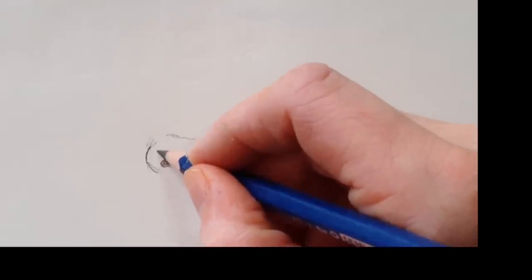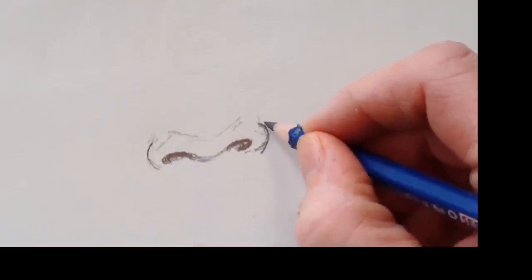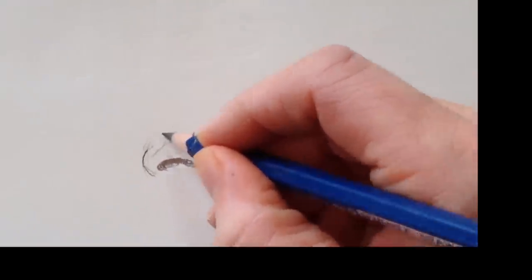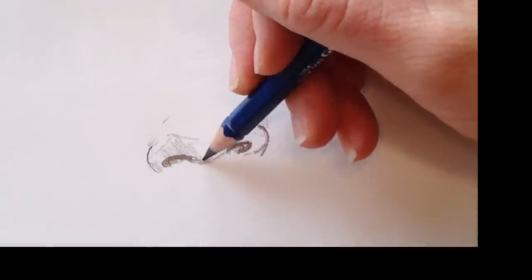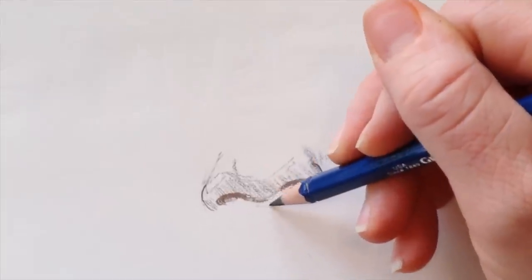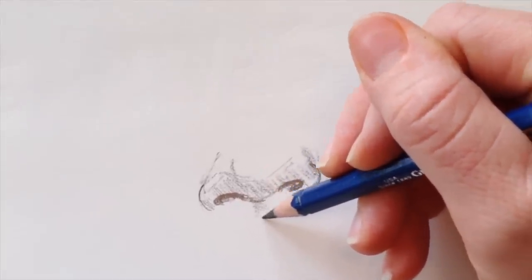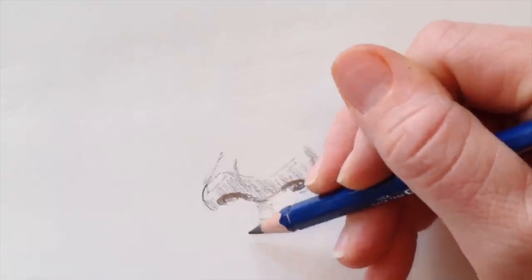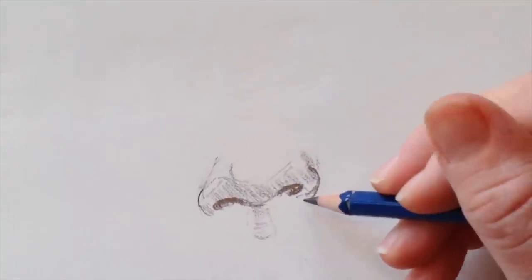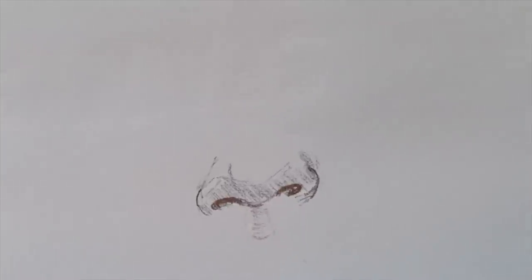Draw a long V, then shade in under that V to create the shadow underneath your nose. Some of us have a more pronounced ridge underneath our noses - you can draw a teardrop under there or add a shadow line to show that indent, depending on which nose you're drawing.